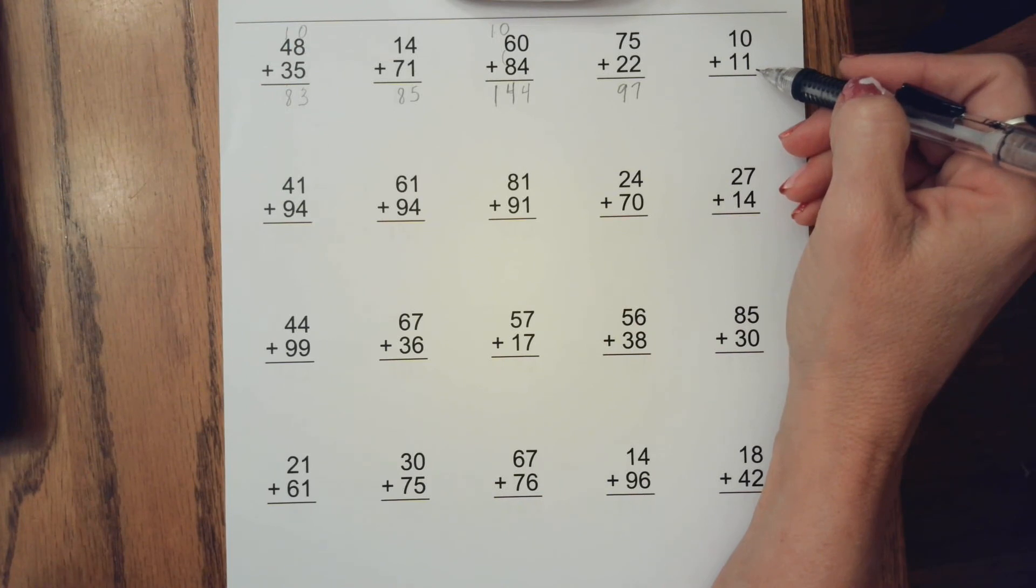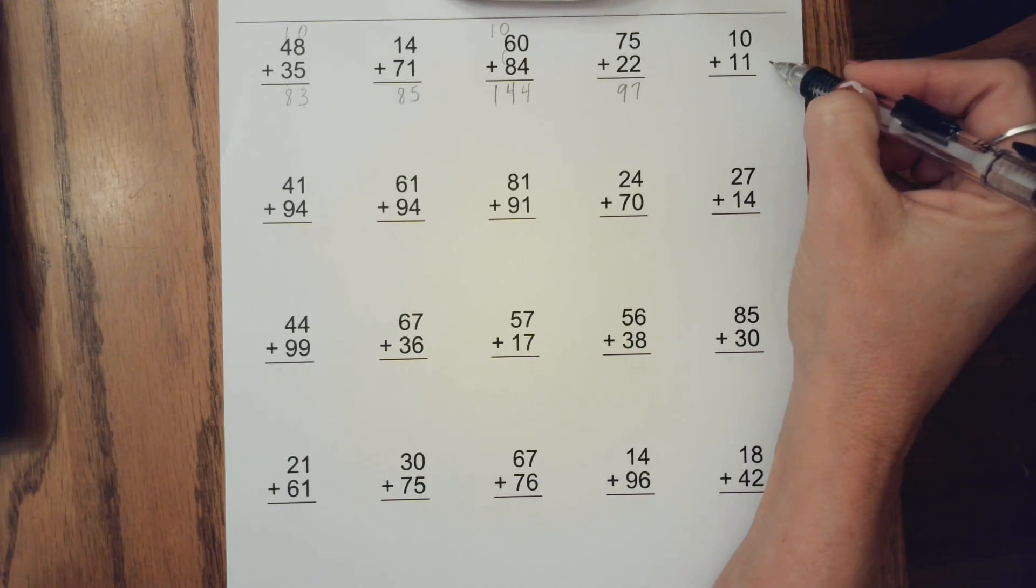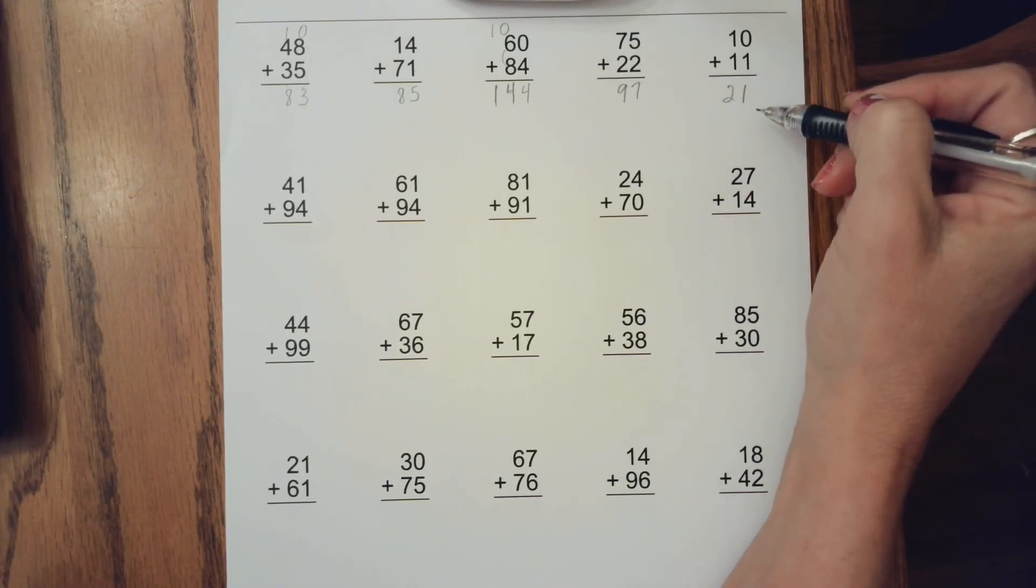Try this next one on your own. You may have looked at this as 10 plus 10 and I have one extra, and you would know that 10 plus 10 is 20 with one more. So you could write 21. Hopefully you got 21 as an answer.